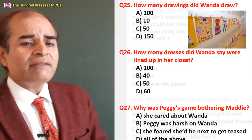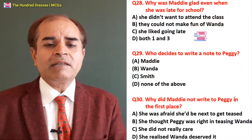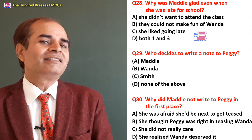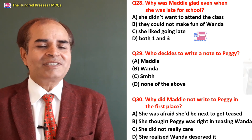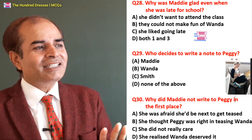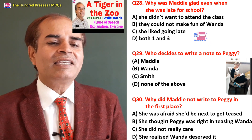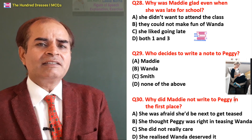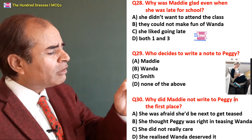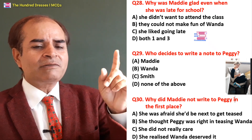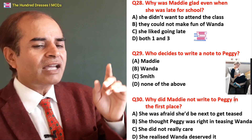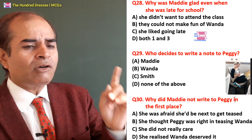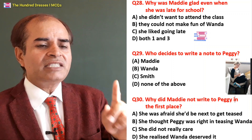Twenty-eighth question: Why was Maddy glad even when she was late for school? She was happy because today Peggy could not make fun of Wanda since Wanda hadn't come. She did not want to attend class? No. They could not make fun of Wenda? Yes — that's why she was glad. She liked going late? No, not at all. B is the right answer.